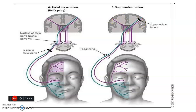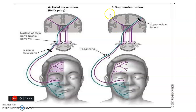The upper part of the face receives upper motor control from both the right and left cerebral cortices, which is why both sides are represented. In an upper motor neuron lesion, the upper facial muscles are spared because of this bilateral cortical supply, while the lower facial muscles are affected because they are controlled only by the opposite cerebral hemisphere.